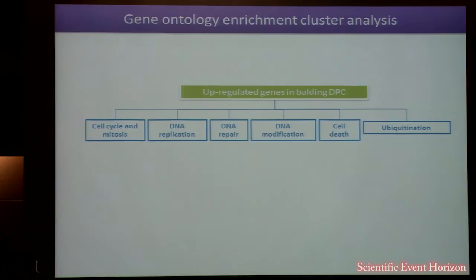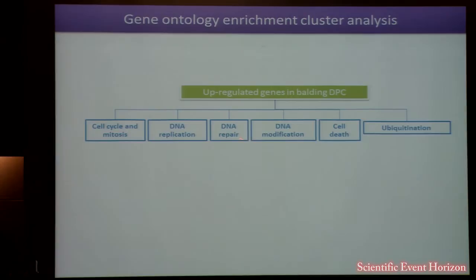Genes up-regulated in balding DPCs compared to non-balding DPCs were highly enriched in gene ontology groups related to cell cycle and mitosis, DNA replication, DNA repair, DNA modification, cell death, and ubiquitination — with cell cycle and mitosis being the most significantly enriched cluster, and ubiquitination the slightly less enriched cluster.